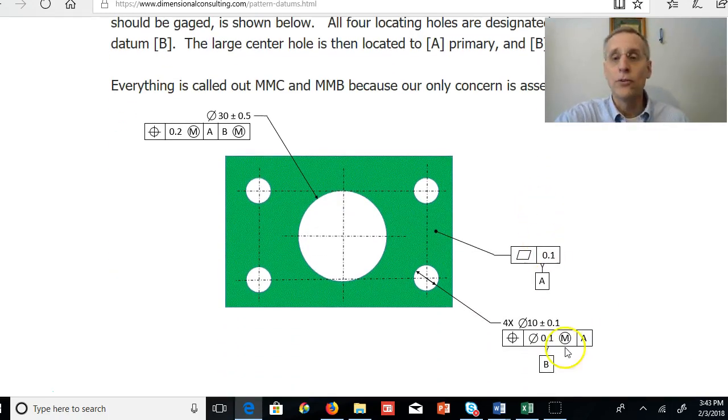Like this. We should use a pattern four times, tolerance of position, max material condition, and that's it. And that is datum B. Four holes constitute a pattern that is datum B.